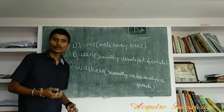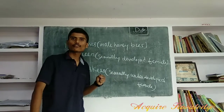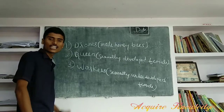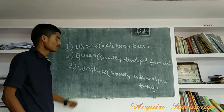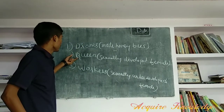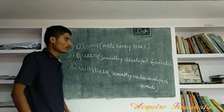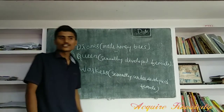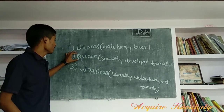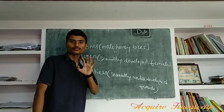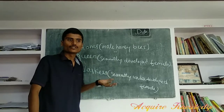Now we will discuss about the queen. In a colony, only a single queen is present — each colony has a single queen. That queen is surrounded by workers. The main primary purpose of the queen is to reproduce. The queen mates with the drone in the air, and after mating, the queen collectively stores the drone's sperm in a special space of her body.